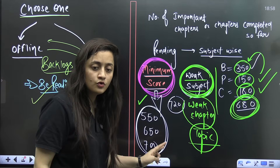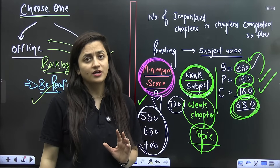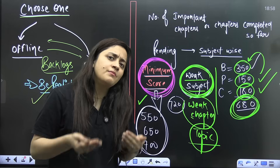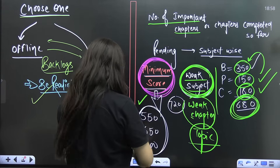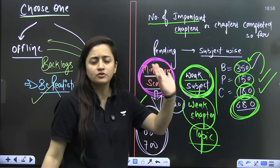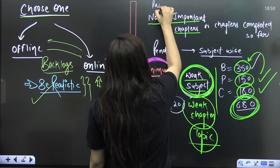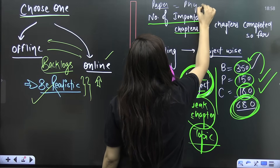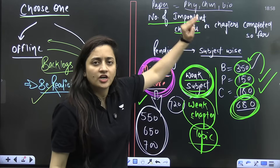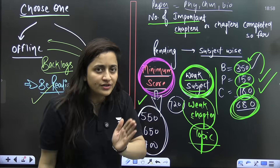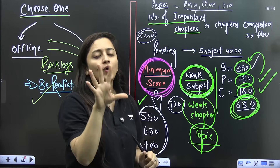If all three subjects are weak, you need to struggle a lot. If your subjects are not weak and your problem is distraction, we'll figure things accordingly. Whatever syllabus you have completed — even if it's just a topic — write it down on paper. Give the titles Physics, Chemistry, Biology and list how many chapters you have completed out of each. Even if that number is zero, don't get panic attacks.